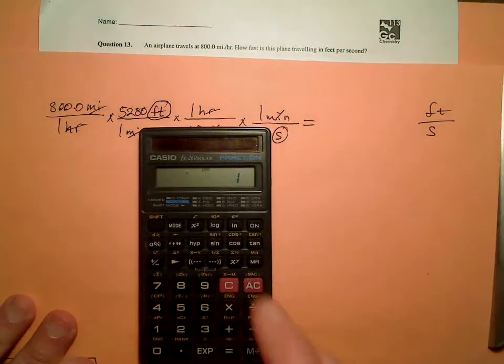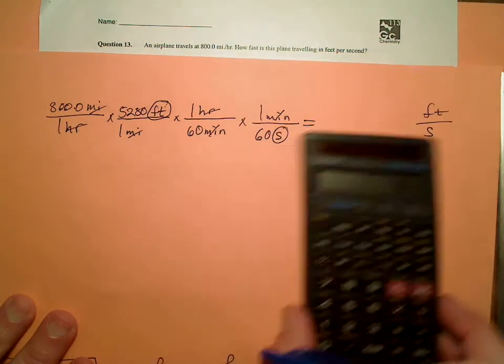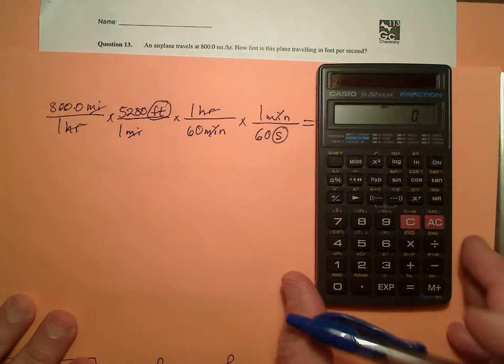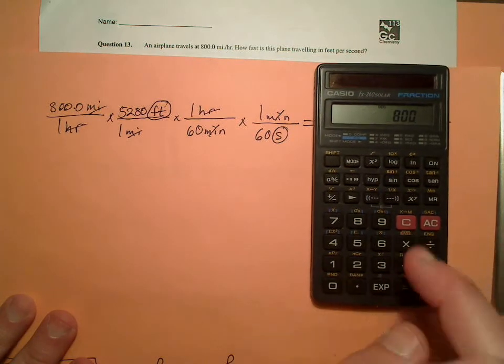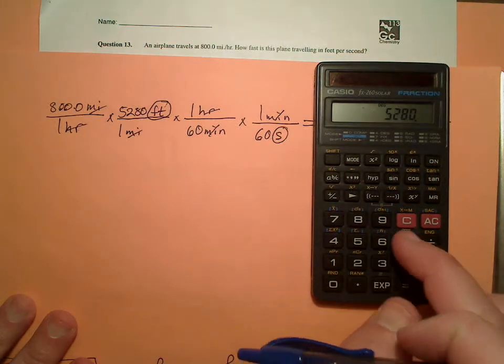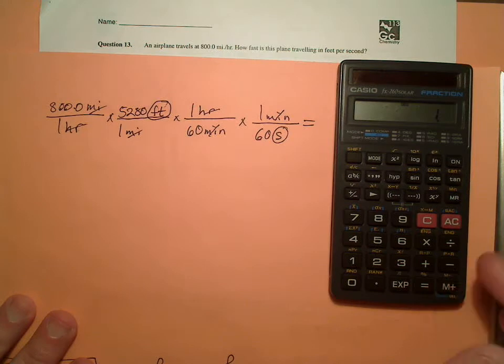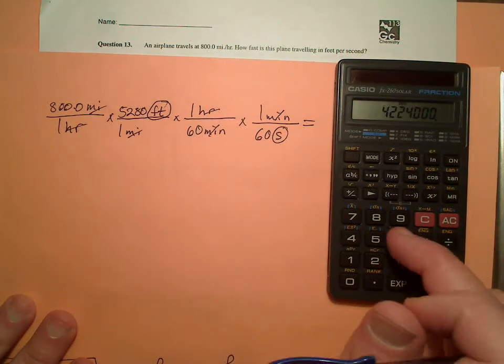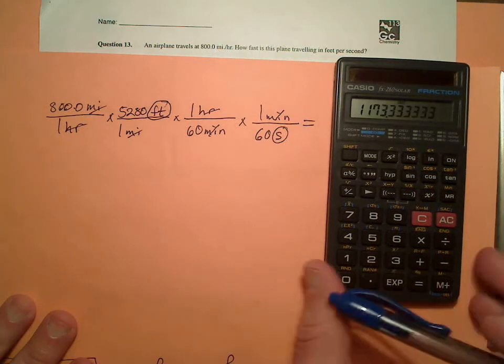So let's plug and chug. Let's see. 800 times 5,280 times, I'll just say 1. Because I don't need to deal with 1. Divided by 60. Divided by 60. Equals.